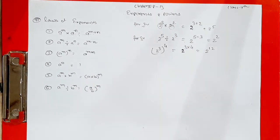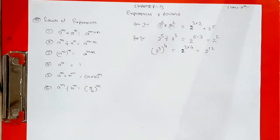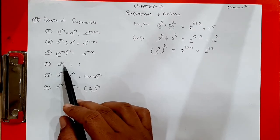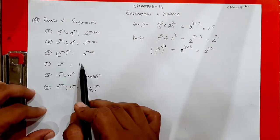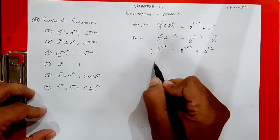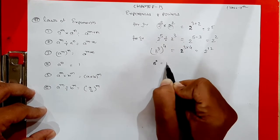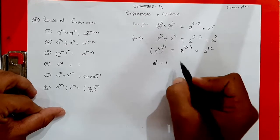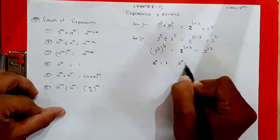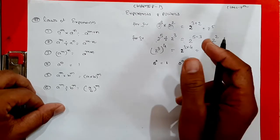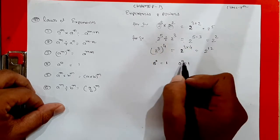The fourth rule is: a raised to 0 equals 1. Any number raised to the power 0 always gives 1. For example, 5 raised to 0 gives 1. Even 0 raised to 0 is also 1. Any number with power 0 gives answer 1.